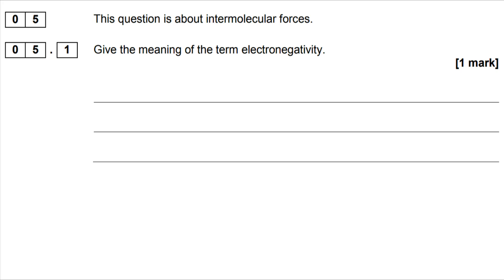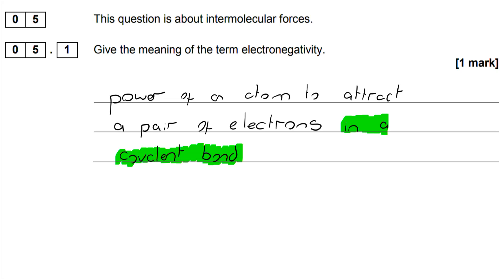We start here with a straightforward definition, one of the fundamentals, the foundation pieces that you have to know if you're going to have any opportunity to apply your knowledge to the more challenging questions. It's only one mark. Power of an atom to attract a pair of electrons will not get you the mark. Commonly, where people get it wrong, they forget to say that this is in a covalent bond.